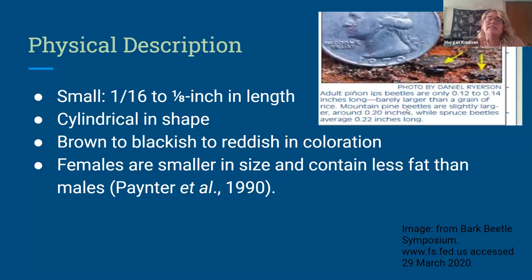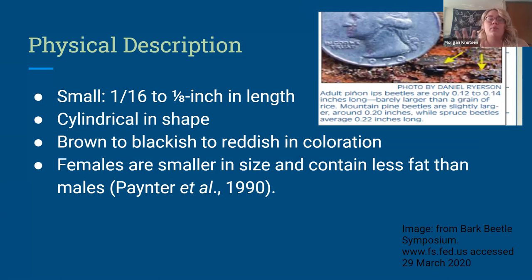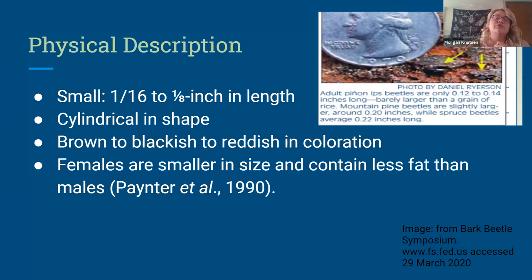These beetles are about 1/16th to 1/8th of an inch in length. They're cylindrical in shape, brown to blackish to reddish in coloration. In general, females are smaller in size and contain less fat than males. If you look at the upper right-hand corner, those tiny beetles at the end of the arrows are adult pinyon Ips beetles, ranging from about 0.12 to 0.14 inches in length. Mountain pine beetles are a little larger, ranging about 0.20 inches, while spruce beetles are even larger, ranging from about 0.22 inches long.